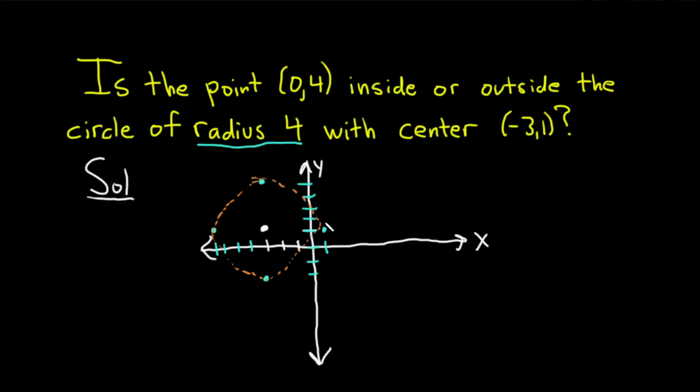And the question is, is (0,4) there? Well, (0,4) is going to be like right here, so it looks like it's probably going to be outside the circle, so I'm going to go with outside the circle.